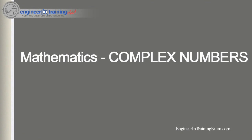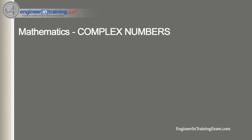Hey, what's going on everyone? It's Justin Dickmeyer from engineerintrainingexam.com, and in this video we're going to review complex numbers. A complex number takes the standard form A plus Bi, where A and B are both real numbers — they can be anything: positive, negative, zero, fractions, decimals. A is called the real part of the complex number and B is called the imaginary part.